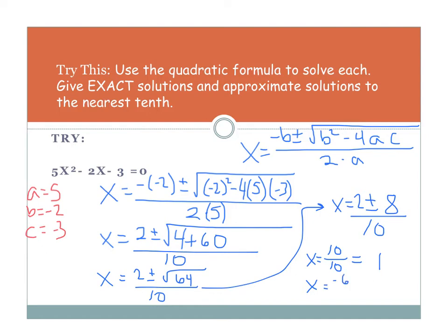And then also, I have 2 minus 8, which is negative 6 over 10, which is going to simplify to, well, they're both divisible by 2, so negative 3 over 5. Two exact answers.